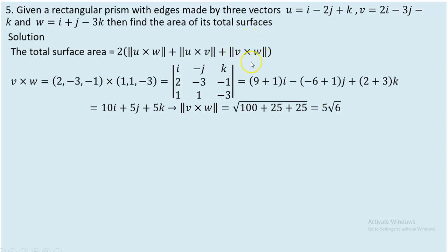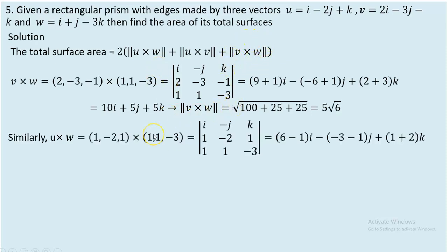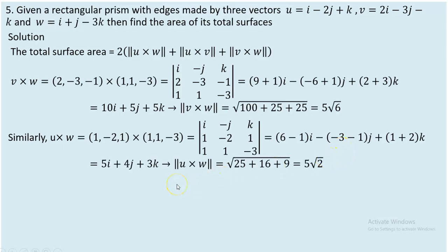Now coming to the second one — norm of U cross W. U has components (1, -2, 1) and W has components (1, 1, -3). Applying the same cross product procedure, we get the vector: (6-1)i - (-3-1)j + (1+2)k, which gives 5i + 4j + 3k. The norm is √(25 + 16 + 9) = √50 = 5√2. So the norm of U cross W is 5√2.